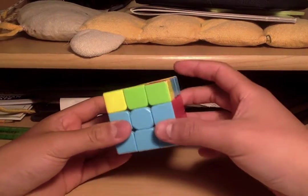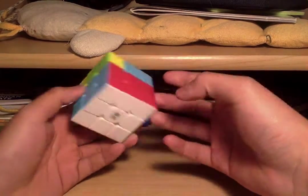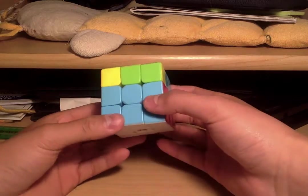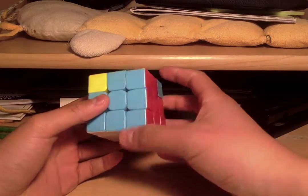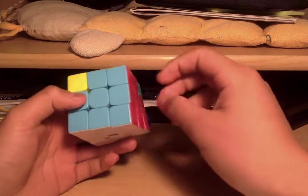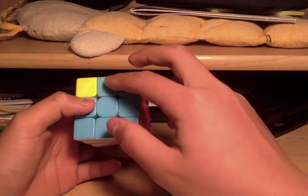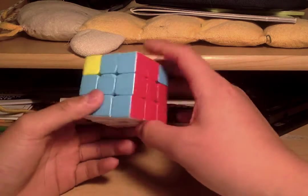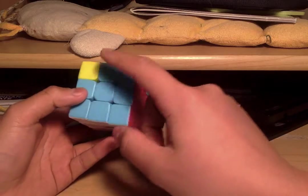This step is easier. What you want to do is turn until you get at least two matched up. As you can see, this one has matched and this one has matched.